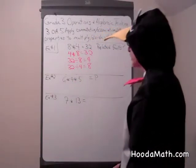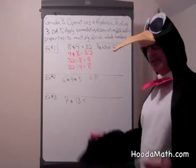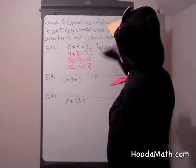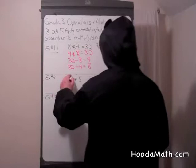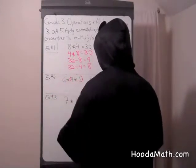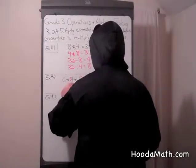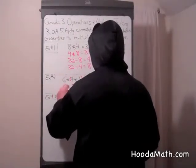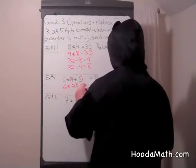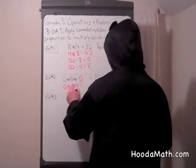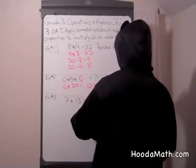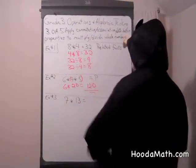How can we multiply 6 times 4 times 5 easily? We can use the associative property and multiply 4 times 5. 4 times 5 equals 20. And then we can multiply 6 times 20. 6 times 0 is 0. And 6 times 2 is 12. 120 is the product.